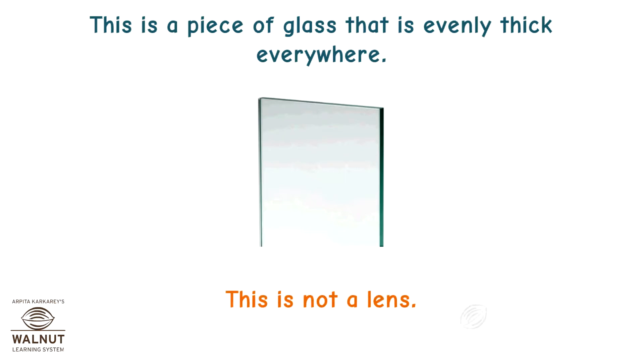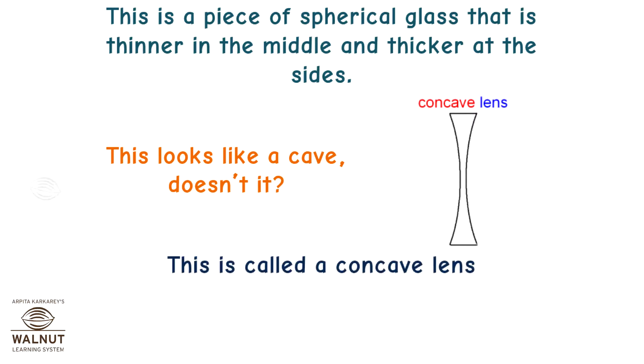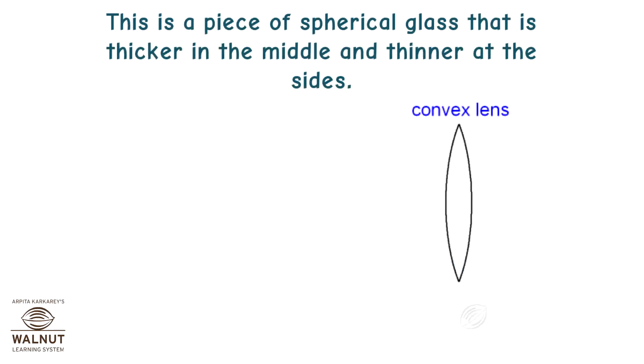This is a piece of spherical glass that is thinner in the middle and thicker at the sides. This looks like a cave, doesn't it? This is called a concave lens. This is a piece of spherical glass that is thicker in the middle and thinner at the sides. This is called a convex lens.